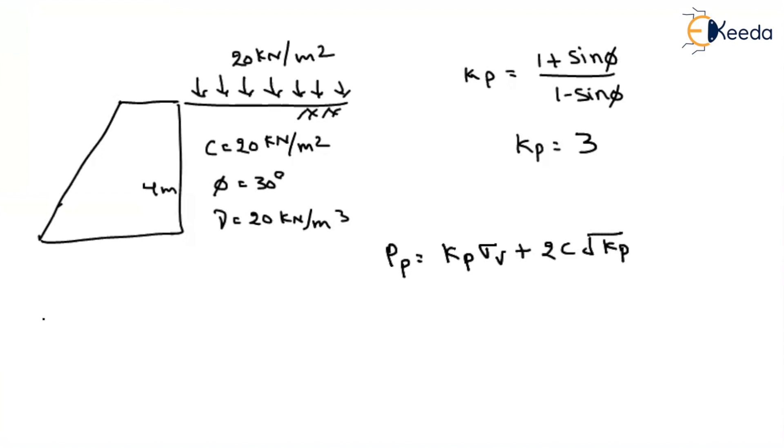Now, at top of soil, what is the vertical stress? The vertical stress is nothing but 20 kilonewton per meter square. Now substitute in the equation: Kp is 3, vertical stress is 20, plus 2 into cohesion 20 under the root 3. If you find out this value, then you will get it around 129.3 kilopascal.